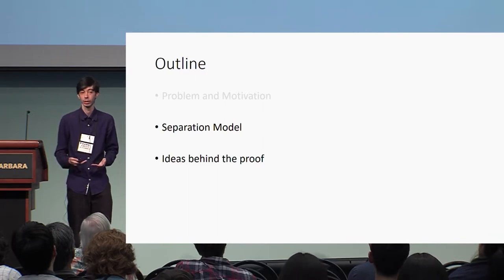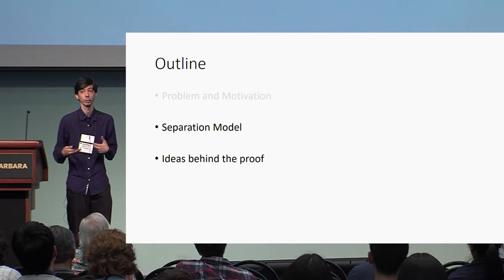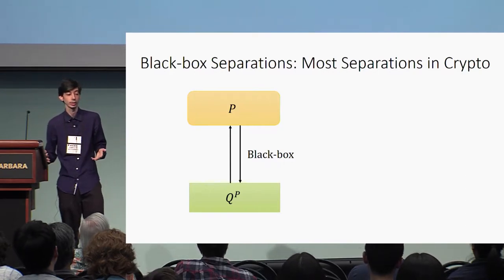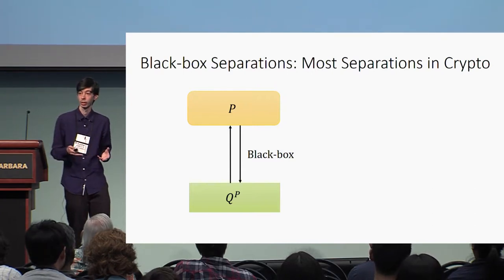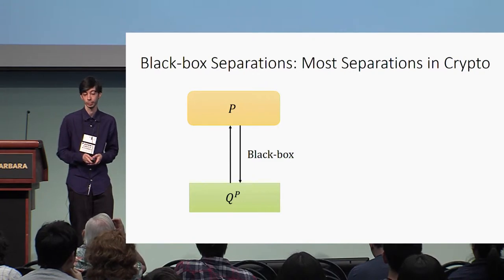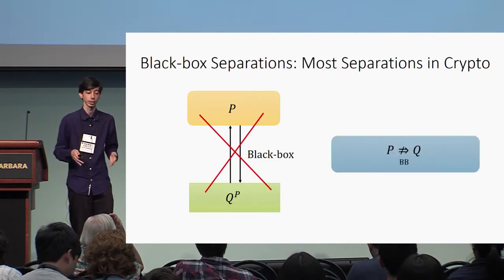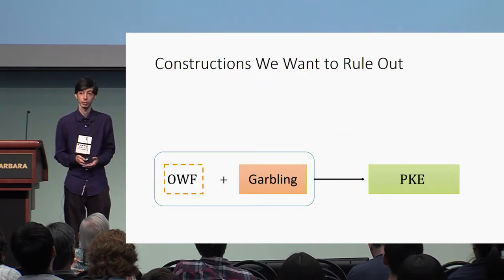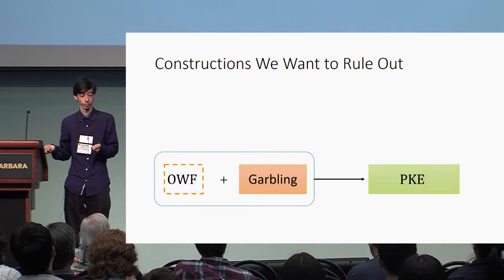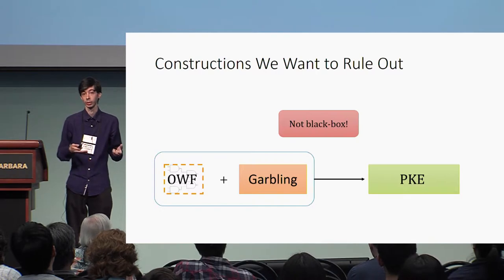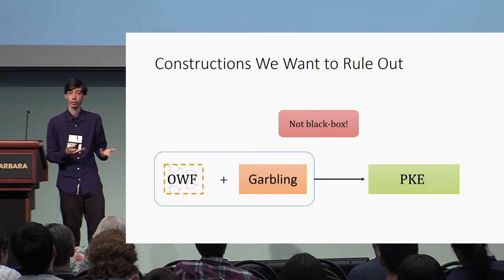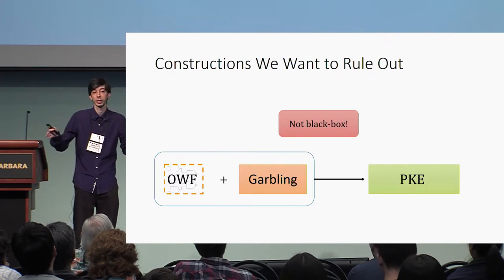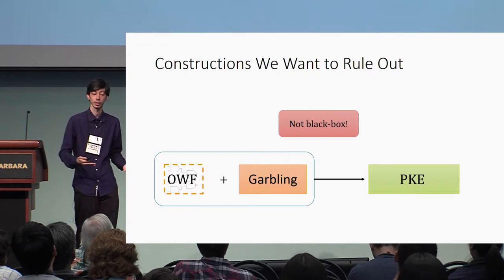Now I'll explain how we model our problem so we can prove our result. When we talk about black box separations, we use black box separation techniques to separate a primitive Q from another primitive P that uses it in a black box way. However, we cannot simply use black box separations in our case because the constructions we want to rule out are inherently not black box—any time we use garbling to build our PKE scheme, we're using a one-way function in a non-black box way. So how can we cast this non-black box construction as a black box construction so we can apply standard black box separation techniques?